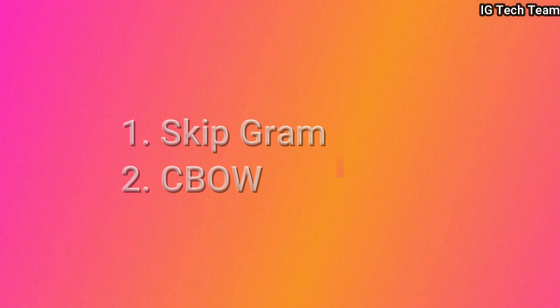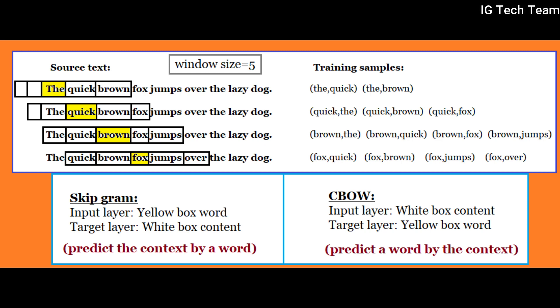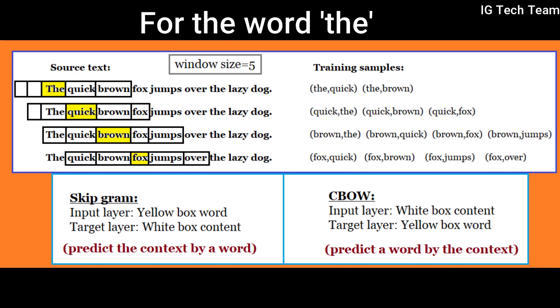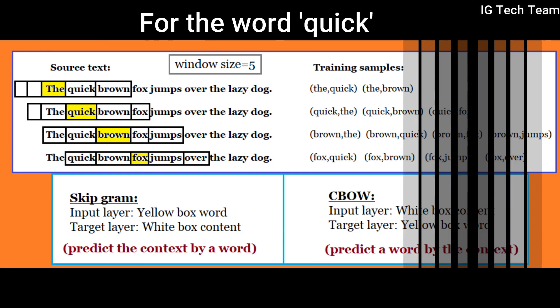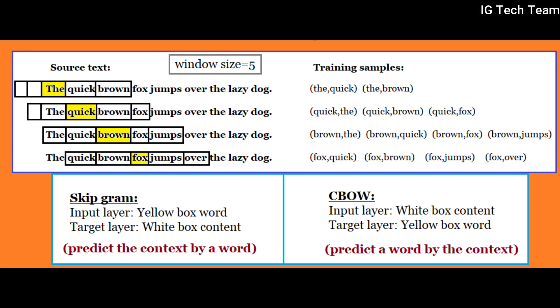What is skip-gram and continuous bag of words? Look at this figure — I will explain skip-gram and CBOW from this figure. We have one example: 'the quick brown fox jumps over the lazy dog.' I have defined the window size to be five. Now for the word 'the,' my training samples will be 'the quick' and 'the brown,' which are inside the window. In the same way, for the word 'quick,' my training samples will be 'quick the,' 'quick brown,' and 'quick fox,' which are inside the window. In this way we can collect training samples.